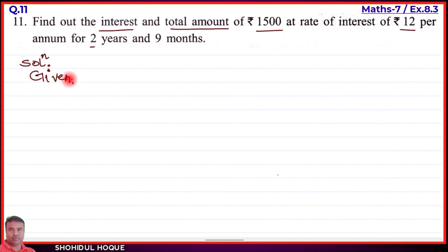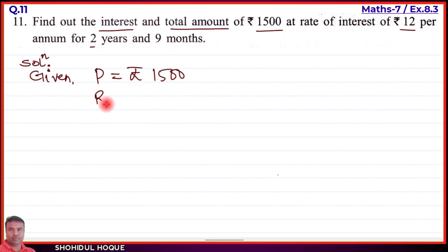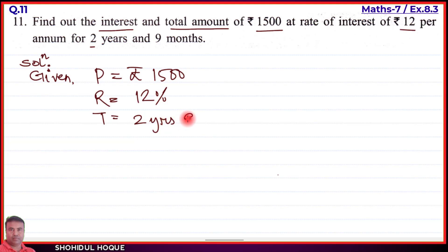Given: P = rupees 1,500; R = 12 percent per annum; T = 2 years and 9 months. We need to convert T to years: 9 months = 9/12 = 3/4 year. So T = 2 + 3/4 = 11/4 years (as an improper fraction).